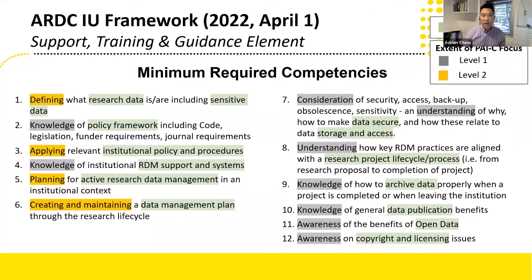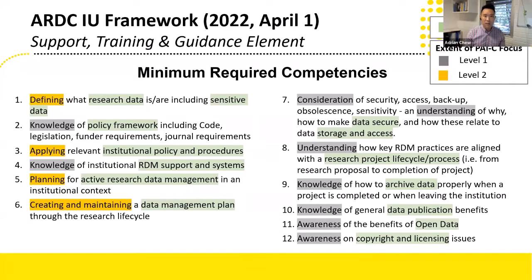There are some baseline RDM competencies identified by the IU framework, which is now out for consultation. At this point there are 12 required competencies in the document. I've highlighted RDM areas in green. The orange areas indicate competencies requiring actions like applying or determining, which will be given a little more focus in our training. Gray indicates competencies relating to knowledge or awareness. This minimum competency framework helps us ring-fence what should be covered in our PISC training.